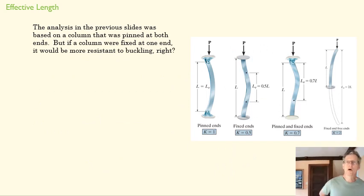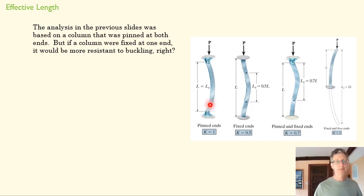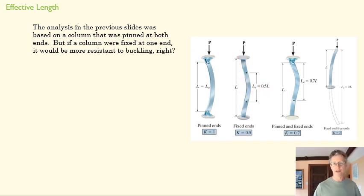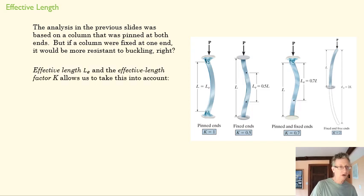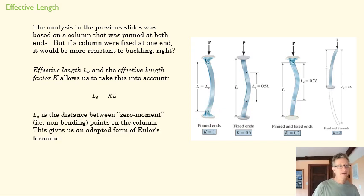There's one more component to take into account: how are the ends of the columns attached? If we have a column that's pinned and can rotate at both ends, there's a much greater chance it will buckle than if we have fixed ends on both ends. A fixed end makes the restoring force trying to keep the column straight much stronger, so it's harder for that column to buckle. We use a factor K and put that into our Euler equation to account for the nature of our attachments, changing our effective length and giving us a new way of writing Euler's formula.